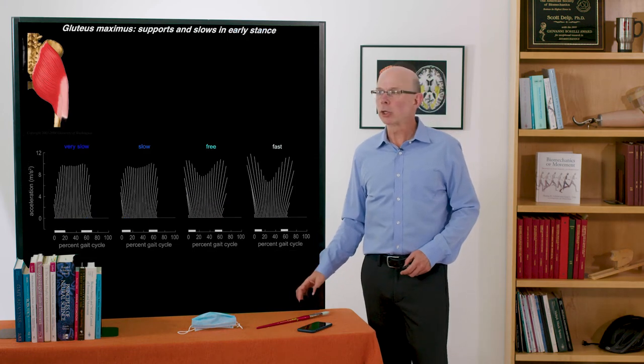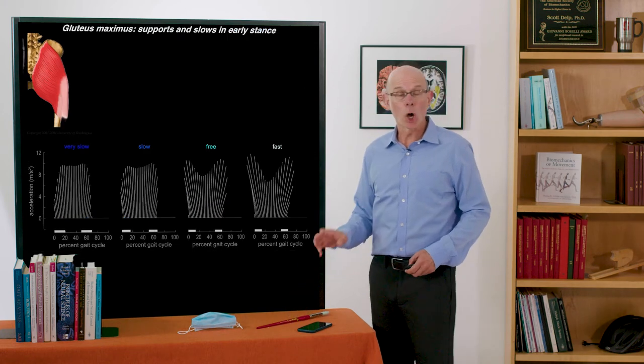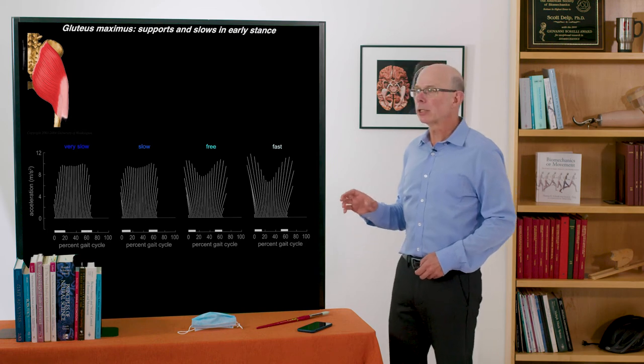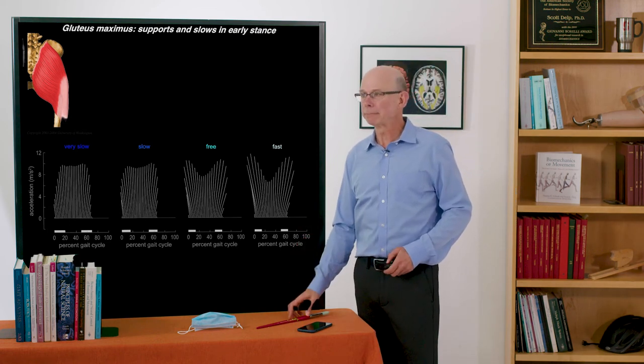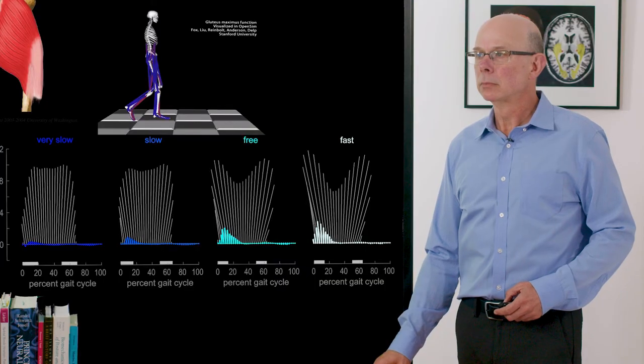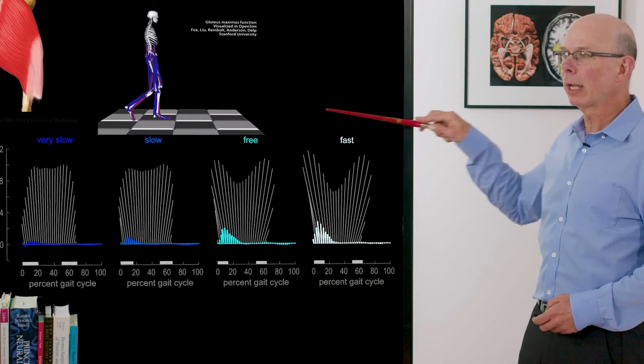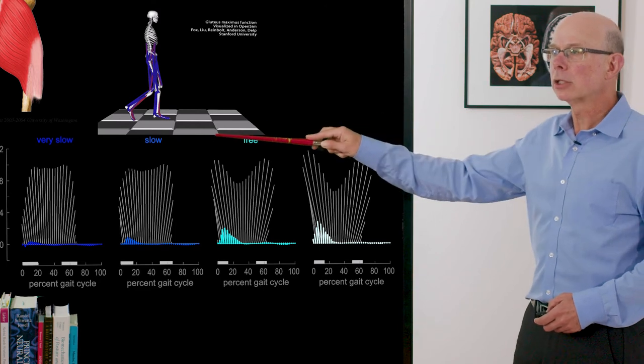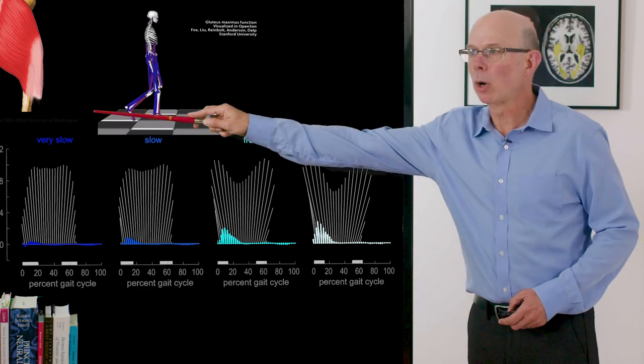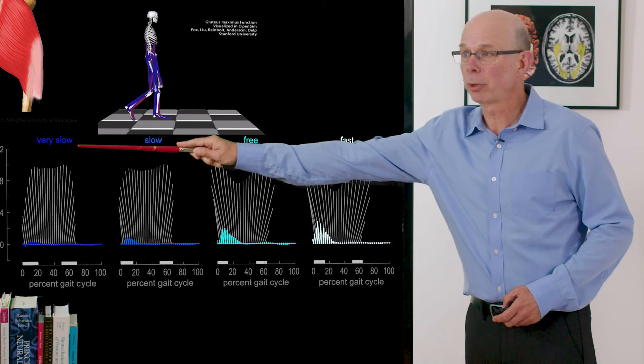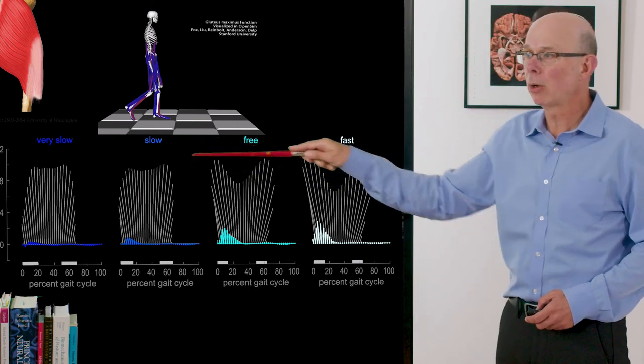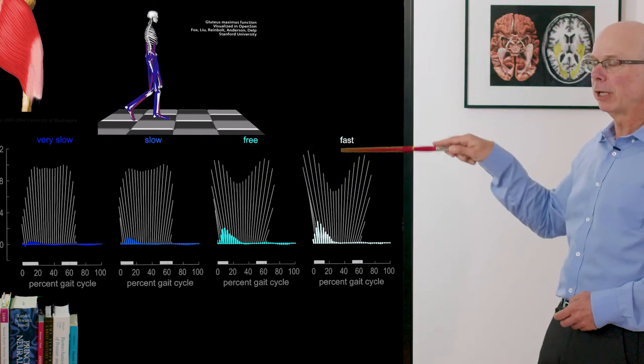Well let's look at gluteus maximus. It is on in early stance and it supports and slows the mass center. So you can see this in the ground reaction force. Again free speed walking, fast walking, slow walking and very slow walking. You see the ground reaction forces are pretty flat in very slow and slow. You get this modulation in free and fast. Gluteus maximus is on and providing that body weight support.